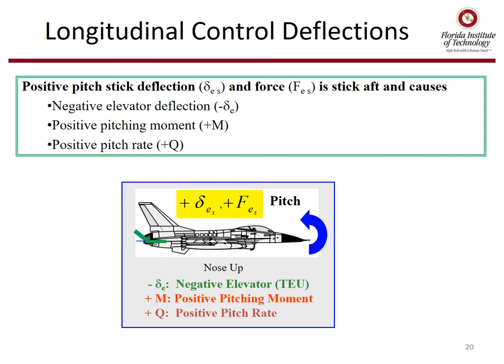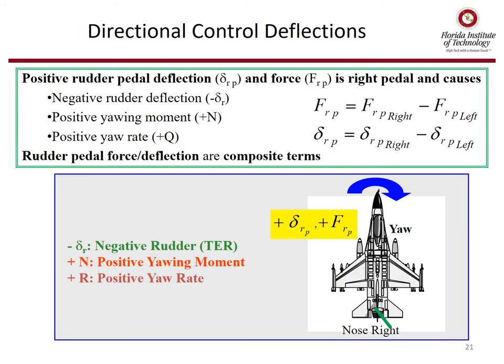For longitudinal control deflections, positive pitch stick deflection and force is stick aft, and causes a negative elevator deflection as we defined it, but a positive pitching moment and positive pitch rate. Positive rudder pedal deflection and force is right pedal, and it causes negative rudder deflection, but positive yawing moment and positive yaw rate.